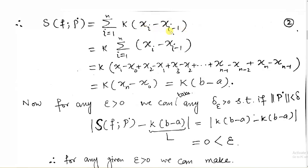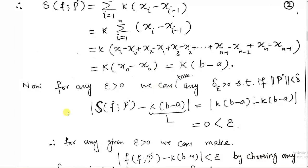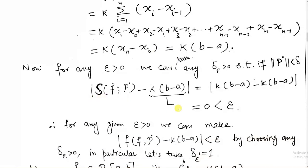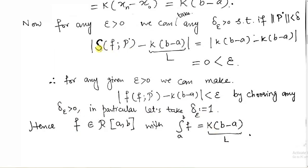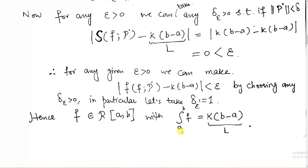the Riemann sum equals the summation from i=1 to n of k times (x_i - x_{i-1}). Taking k as common, the sum of lengths of all sub-intervals equals the length of the whole interval, so the Riemann sum becomes k(b - a). We take L = k(b - a). The difference between the Riemann sum and L is zero, which is less than any epsilon > 0, regardless of delta chosen. In particular, delta(epsilon) = 1 works, so f is Riemann integrable on [a, b] and its Riemann integral equals k(b - a).